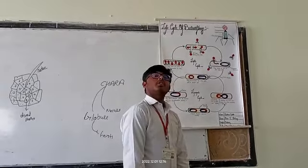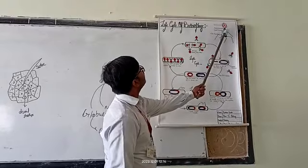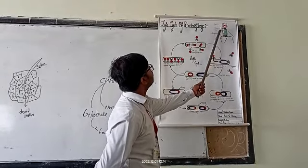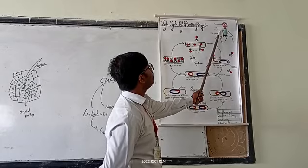So, let's start about the structure of Bacteriophage. Here is the head, it consists of 2000 capsomeres, a collar, a sheath.